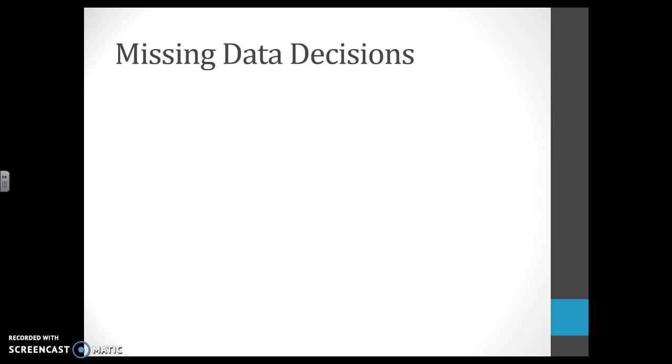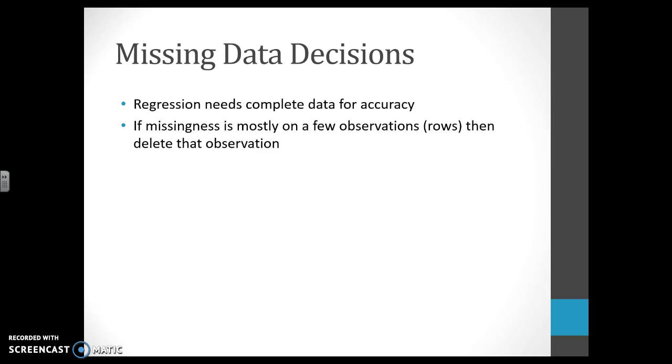If we have missing data, for multiple regression to work we have to have every single cell filled in for every observation and every variable. If we have missingness on a few observations, so if we were looking at the housing data, one house was missing whether it had a garage or not, we can't use that entire house. We would delete that observation, that house, from the data.